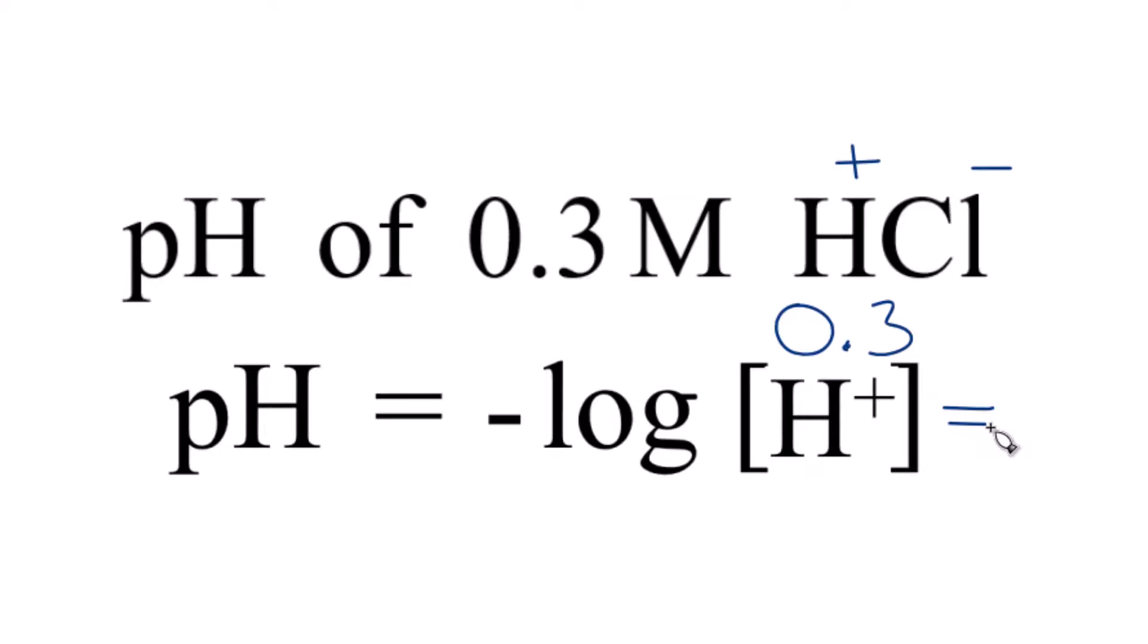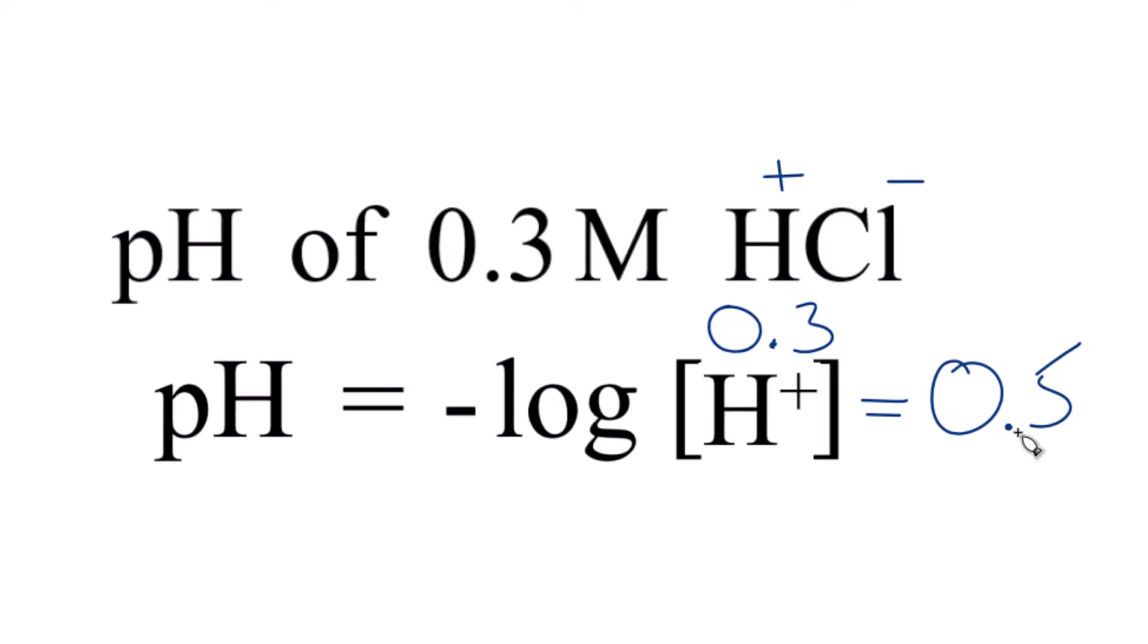And when we do that, we end up with 0.5. So that's the pH of our 0.3 molar solution of HCl. pH is 0.5.